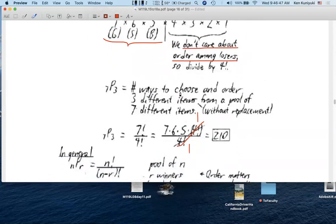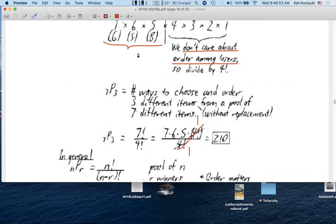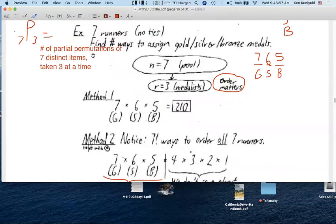So again, 7P3 is the number of ways to choose and order three different items from a pool of seven different items without replacement. You can't have one person getting two medals. It's the number of partial permutations of seven distinct items taken three at a time.